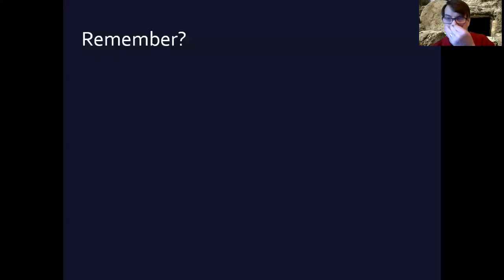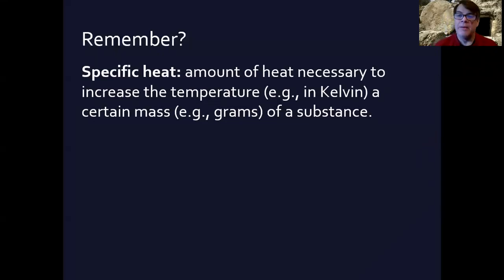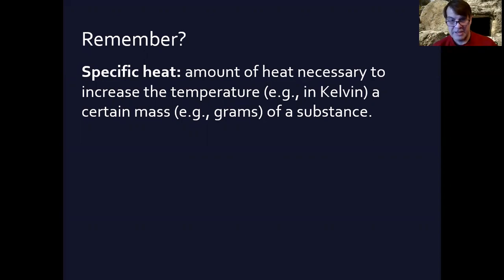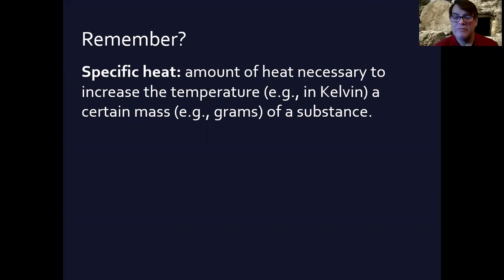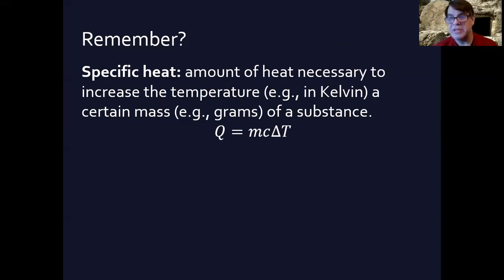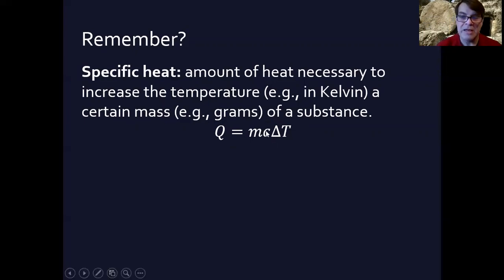You may remember back in chapter 17 we talked about something called specific heat — not a great name, but if you've had a little chemistry, you know that specific heat has to do with the amount of heat necessary to increase the temperature of a certain mass, like one gram of something, by a certain number of degrees, usually calculated in kelvin. So the formula is q = mcΔT, where c is the specific heat.